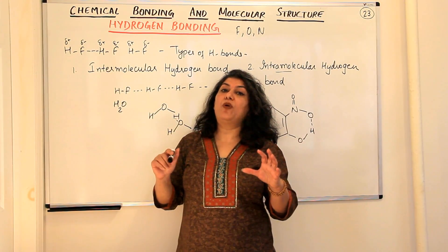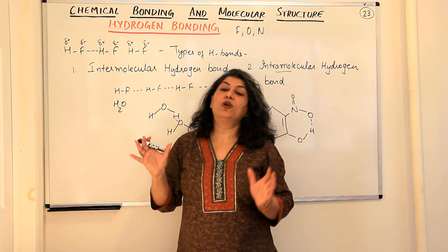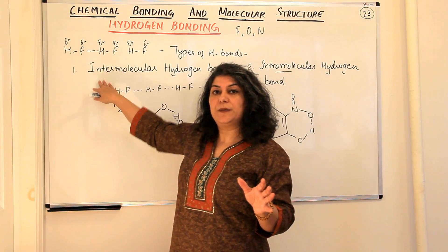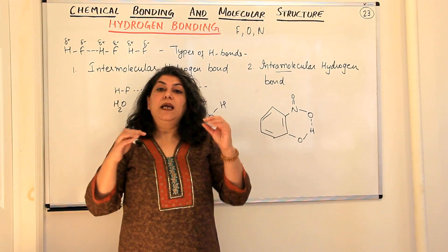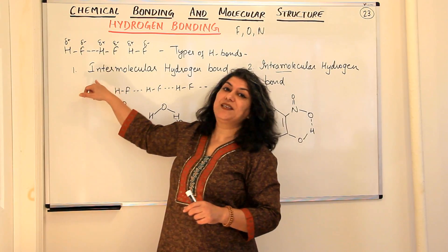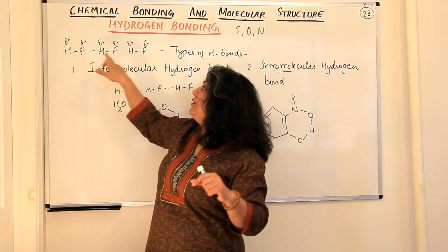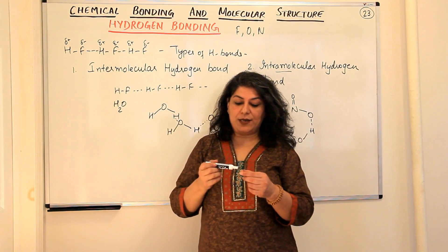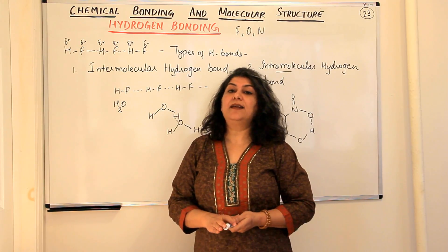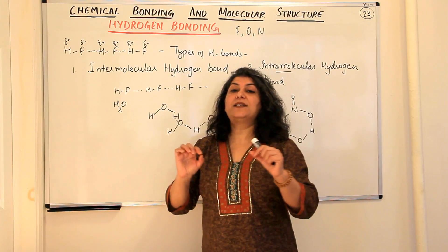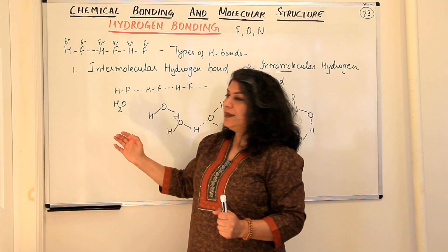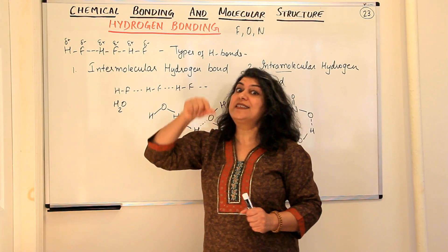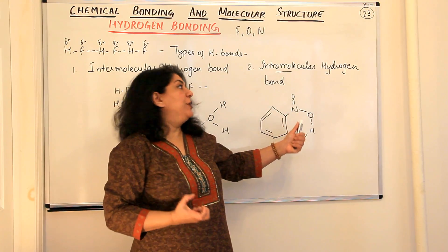Now that we have understood that hydrogen bonds are present in molecules, what are the types of hydrogen bonds? Hydrogen bonds can be divided into two categories: first is the intermolecular hydrogen bond, and the other is the intramolecular hydrogen bond. Intermolecular means when the hydrogen bond is present between the hydrogen of one molecule and the fluorine of another molecule — when the hydrogen bond exists between the electronegative atom and the hydrogen of adjacent molecules, it is known as an intermolecular hydrogen bond. On the other hand, if the hydrogen bond is present between the electronegative atom within the same molecule, it is called an intramolecular hydrogen bond.